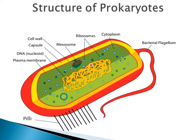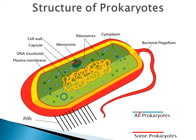This is a bacterial cell and it's a sample of a prokaryotic cell. Before starting to explain, let's read the legend here. Every organelle in blue color is found in all the prokaryotes. However, the red organelles are found in some prokaryotes, like this bacteria.